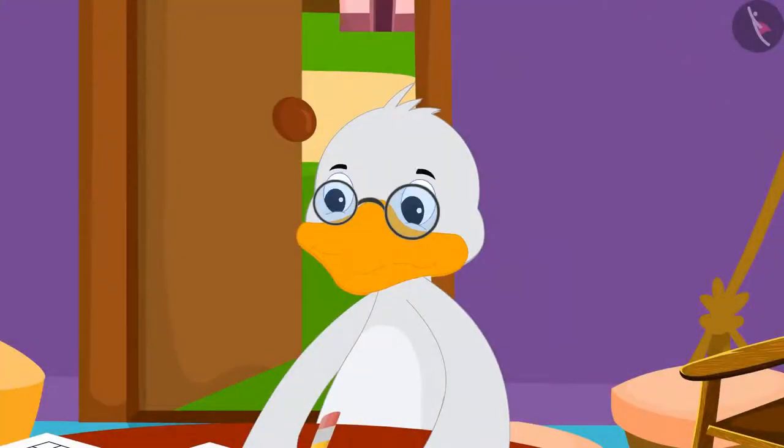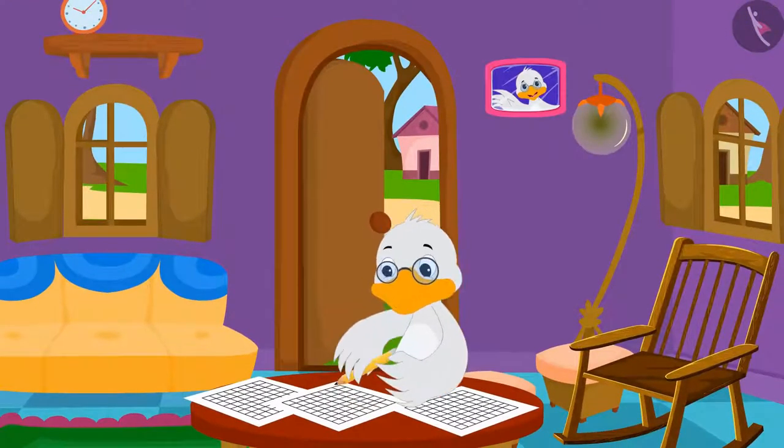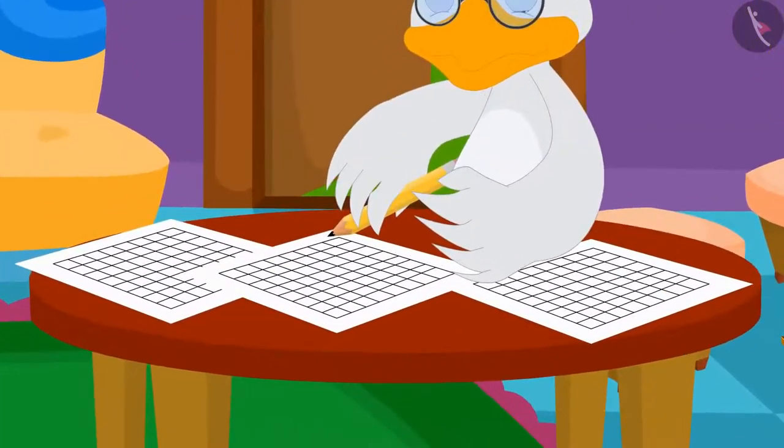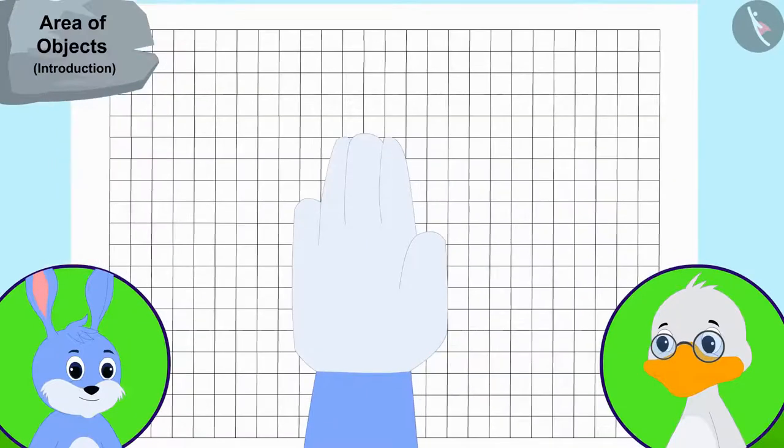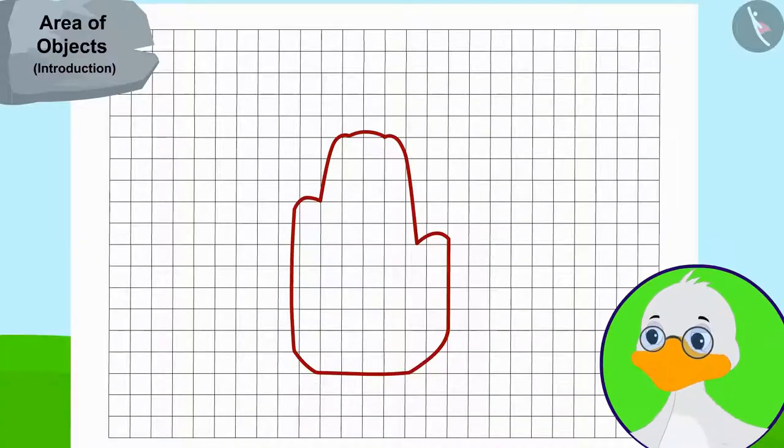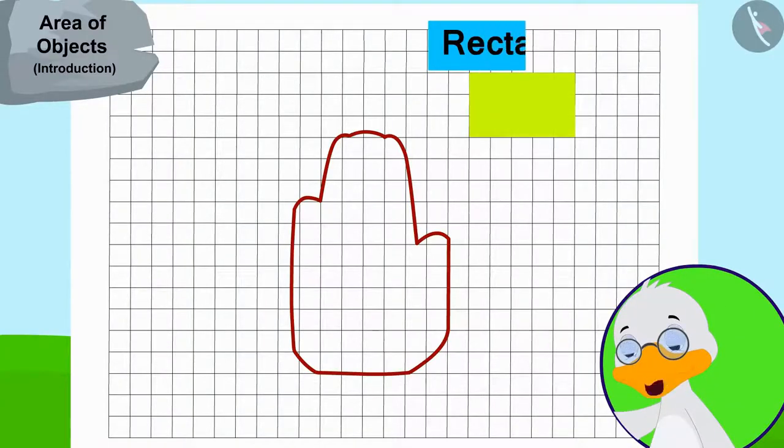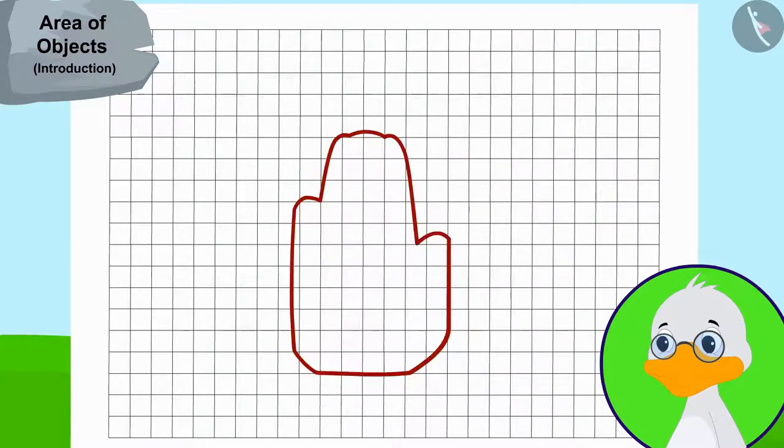Now uncle made grid papers using some other papers too by making equal squares of one centimeter long edges. Uncle first took the impression of bunny's hand on a grid paper like this. I will need to find an easier process to find its area, thought uncle. Let me first draw as many rectangles and squares as I can in this shape. Saying this, Uncle made three rectangles in this way in bunny's hand impression.